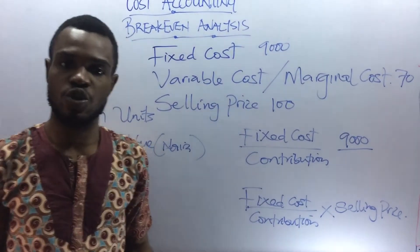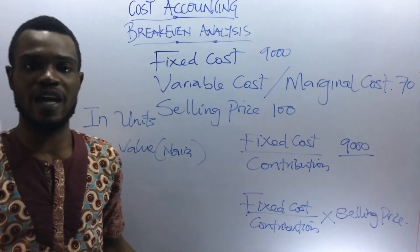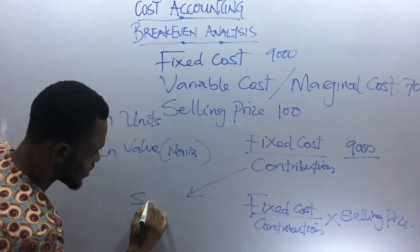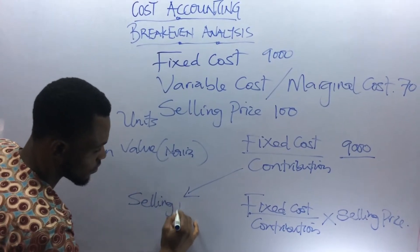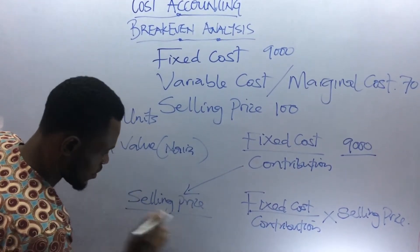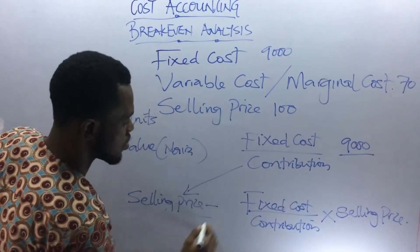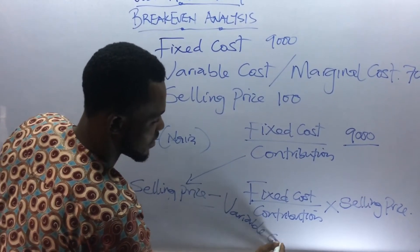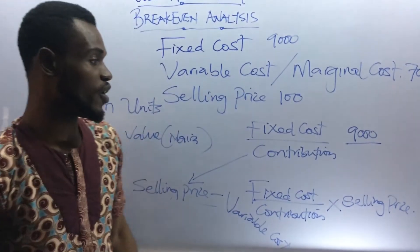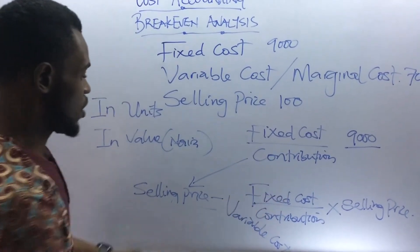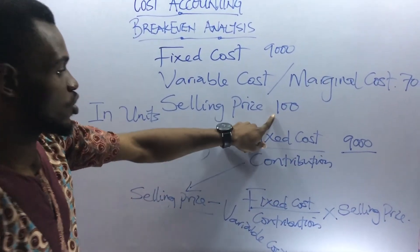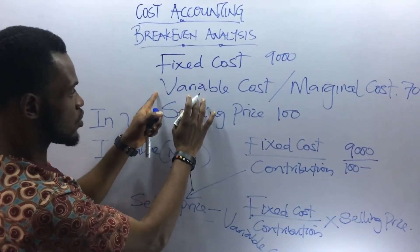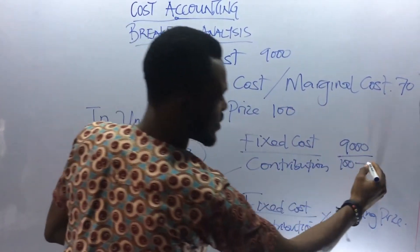Now, to get your contribution, it is the selling price minus the variable cost. The formula for contribution is: selling price minus the variable cost. So, contribution — what is the selling price from this question? We have $100. So it is $100 minus our variable cost, which is $70.